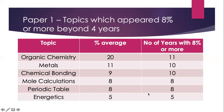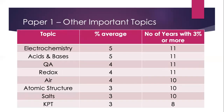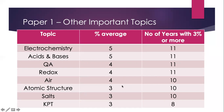The percentage average and number of years for energetics seem lower than other topics because it was less prominent in the earlier years. The remaining topics are still important. Electrochemistry and acid-base both have an average of 5% over the past eleven years and appear every year with 3% or more. QA and redox are next with 4% average and appear every year in Paper 1, followed by air, atomic structure, salts and KPT.